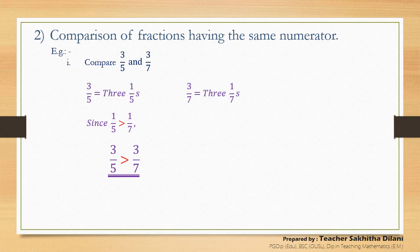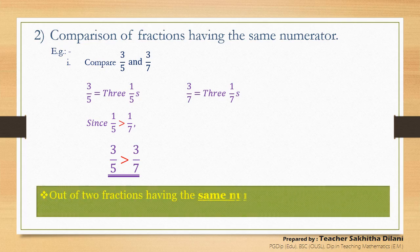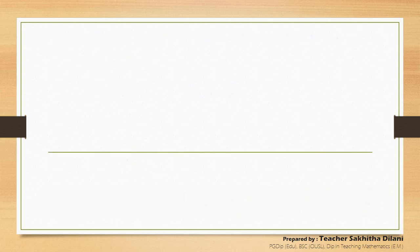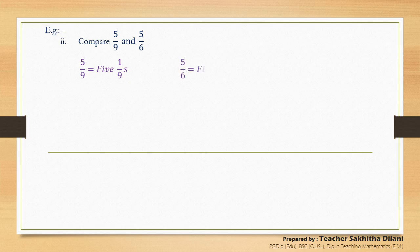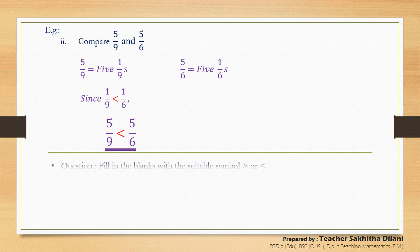In these two fractions the numerators are equal. Hence, we can conclude that out of two fractions having the same numerator, the larger fraction is the fraction with the smaller denominator. Let's see another example — compare five-ninths and five-sixths. Five-ninths can be expressed as five one-ninths and five-sixths as five one-sixths. You know that one-ninth is less than one-sixth, so five-ninths is smaller than five-sixths. Now you are given a question: fill in the blanks with the suitable symbol, greater than or less than.